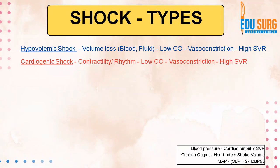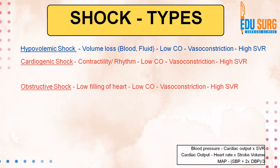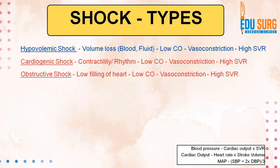On the other hand, cardiogenic shock is a problem related to the heart — an intrinsic problem. Here contractility is a problem, rhythm is a problem, and what this results in is a low cardiac output. Again, the vasculature tries to compensate, so there is high systemic vascular resistance. Similarly, with a heart-related problem, cardiac output goes down, but vasoconstriction and high systemic vascular resistance will again be a hallmark of obstructive shock.